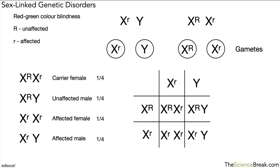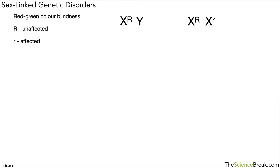So there's a one-in-four chance of each of those outcomes occurring. We could try another example with a different combination of alleles for this disorder — pause here, have a go by yourself, and then we can go through it together.